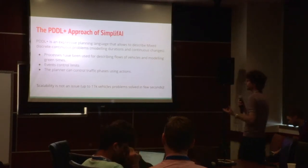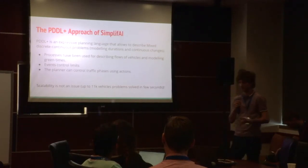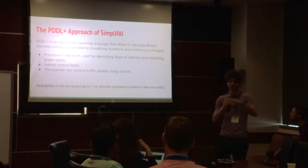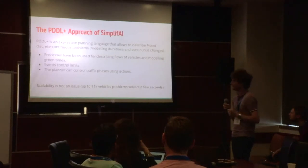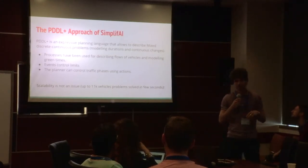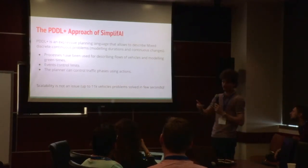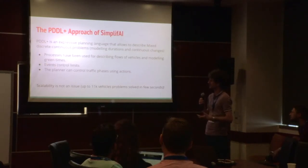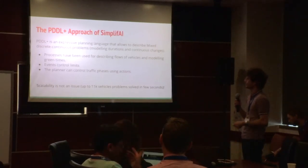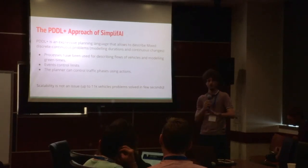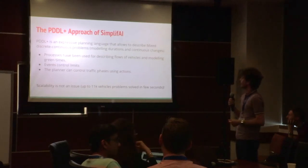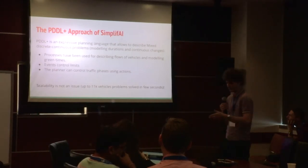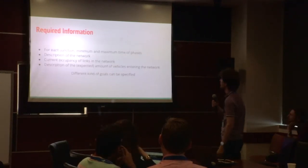Why did we use PDDL+? Because it works well for the expressivity needed and for the way we model the problem. Think about an urban region as a set of water pipes all connected: junctions are where pipes connect, and vehicles are the water flowing through. What you want to do from a traffic signal optimization perspective is understand when to open different taps to let water flow as much as possible. PDDL+ works well here because you have processes — continuous changes modeling vehicle flow — and events to control limits: when the pipe is full or when the time is over.